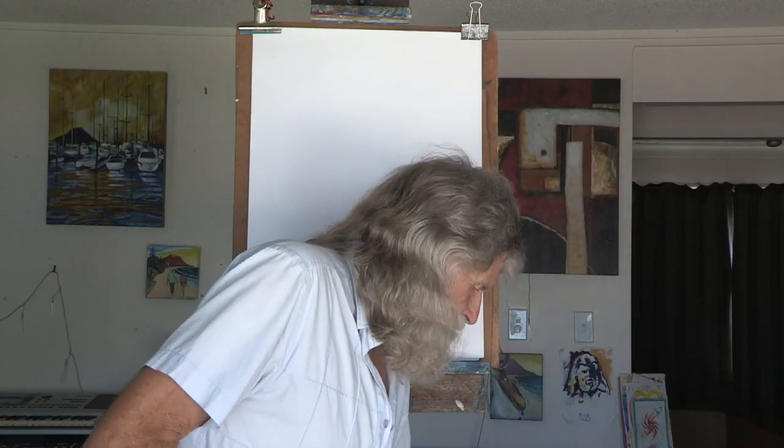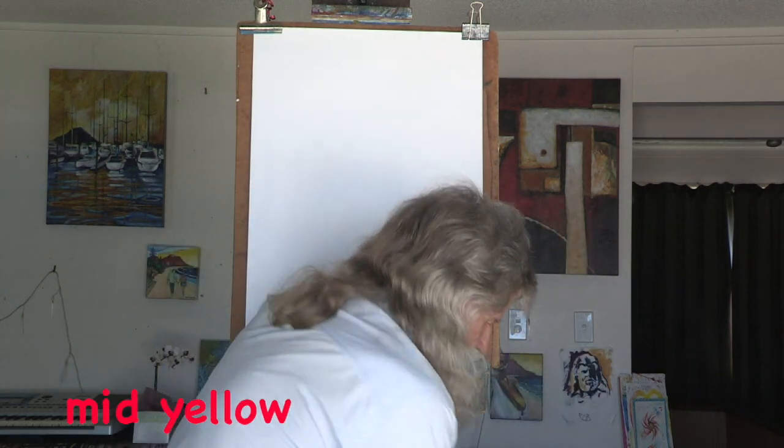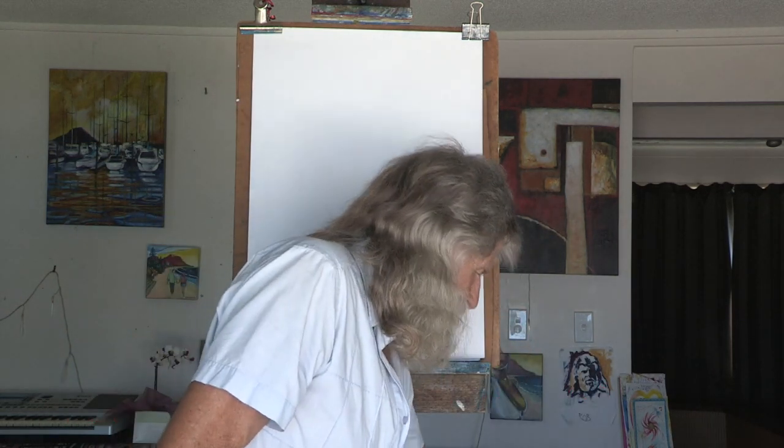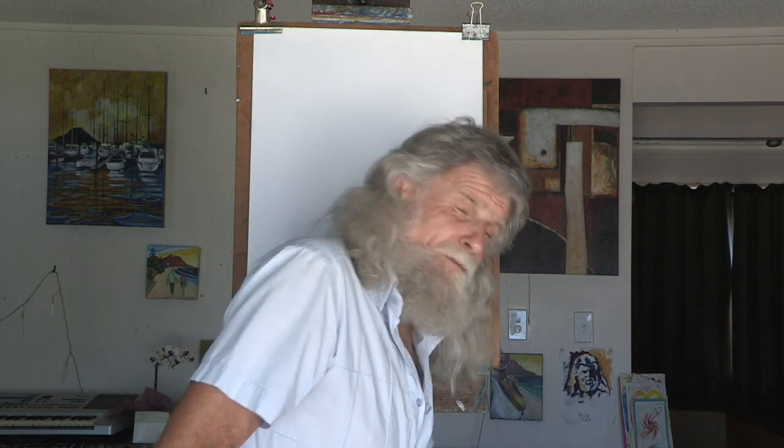First of all, the primary colours. Primary colours are the colours that cannot be mixed from any other colour, but from which we can mix virtually all other colours. The primary colours that I use: a mid yellow, a phthalo blue which is a slightly green shade of blue, and red which is magenta — a sort of pink, toned red.